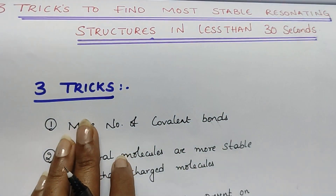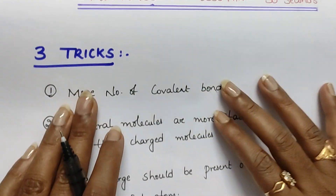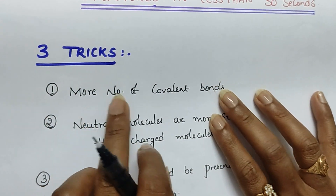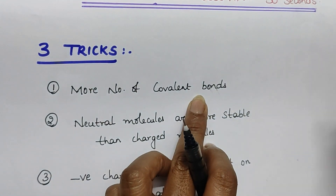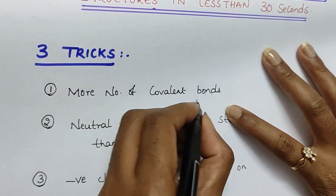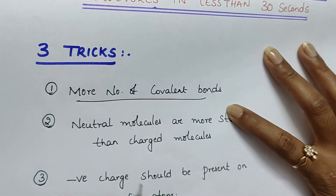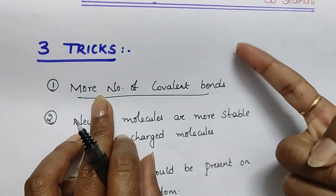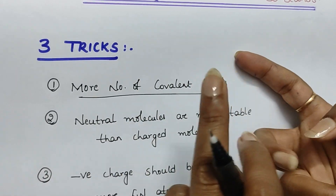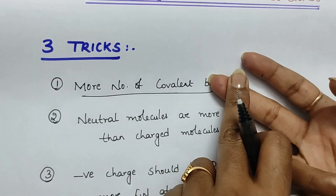Trick number one: more number of covalent bonds. You should count the number of covalent bonds — if more is the number of covalent bonds, more is the stability of the structure.